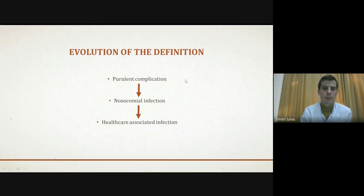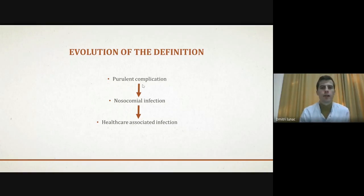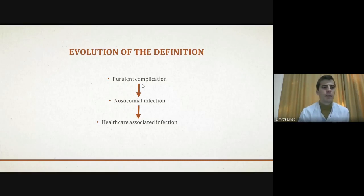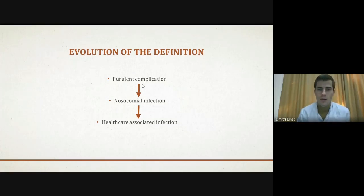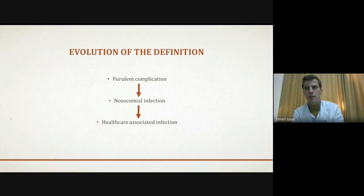After medical society started using the term 'purulent complication,' epidemiologists argued it was not fair, because a complication is something you cannot prevent — something you can expect but not avoid. For example, in an elderly surgical patient, the risk of thromboembolism during surgery can lead to death on the surgical table and cannot truly be prevented. Whenever you can prevent something, it is not a complication — it is a separate disease.